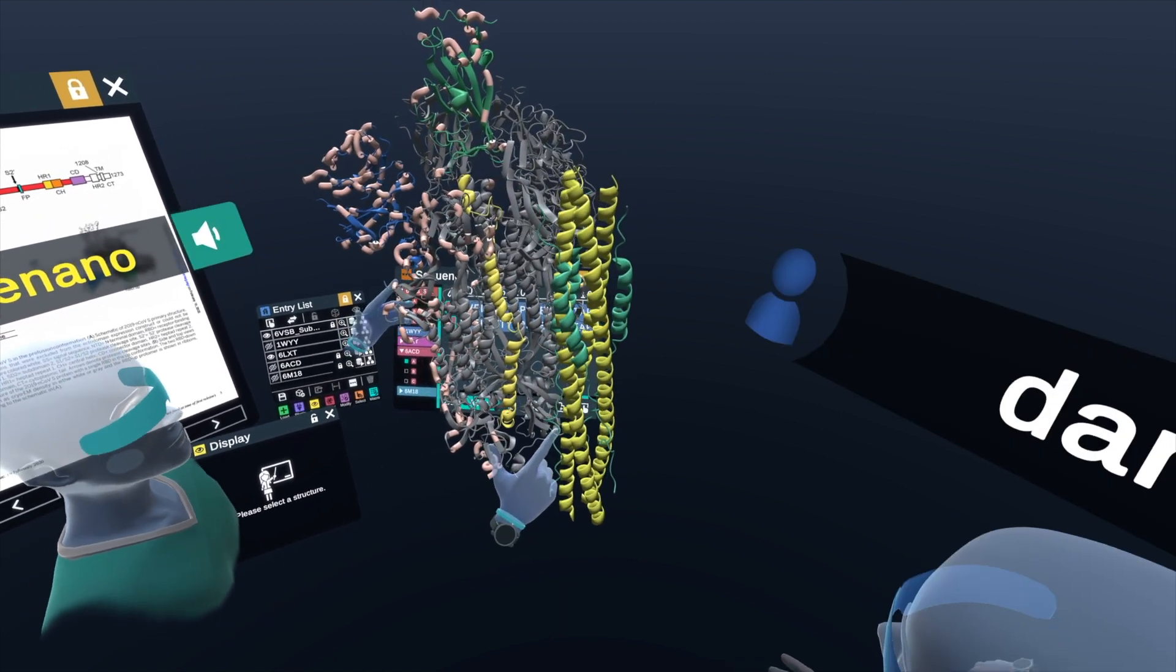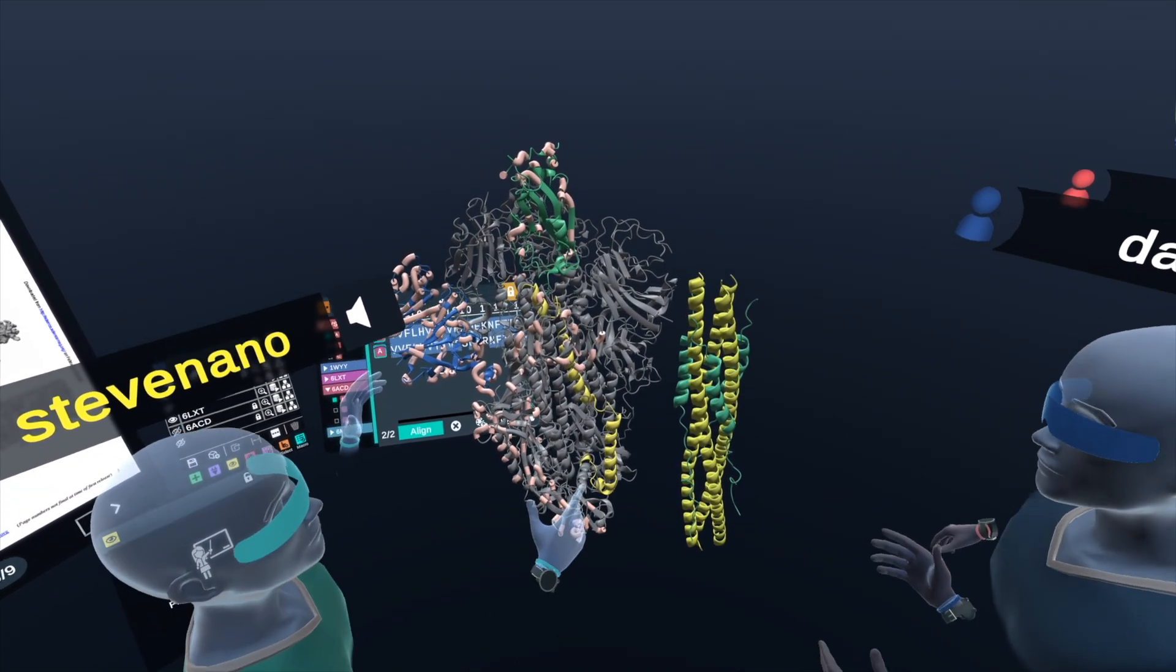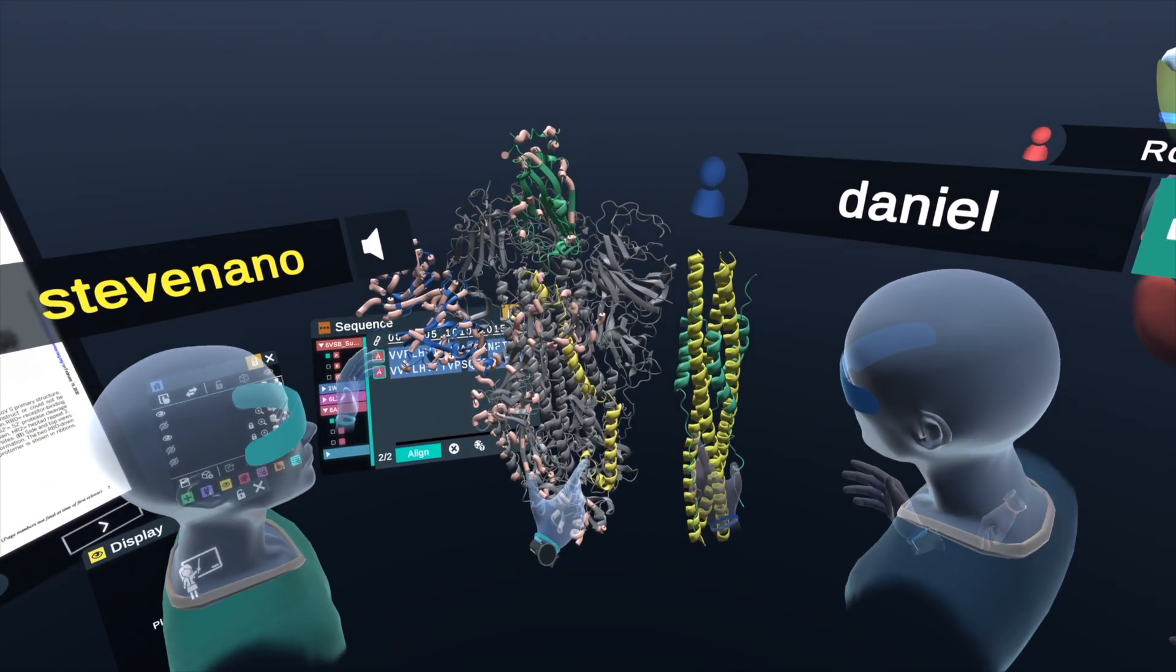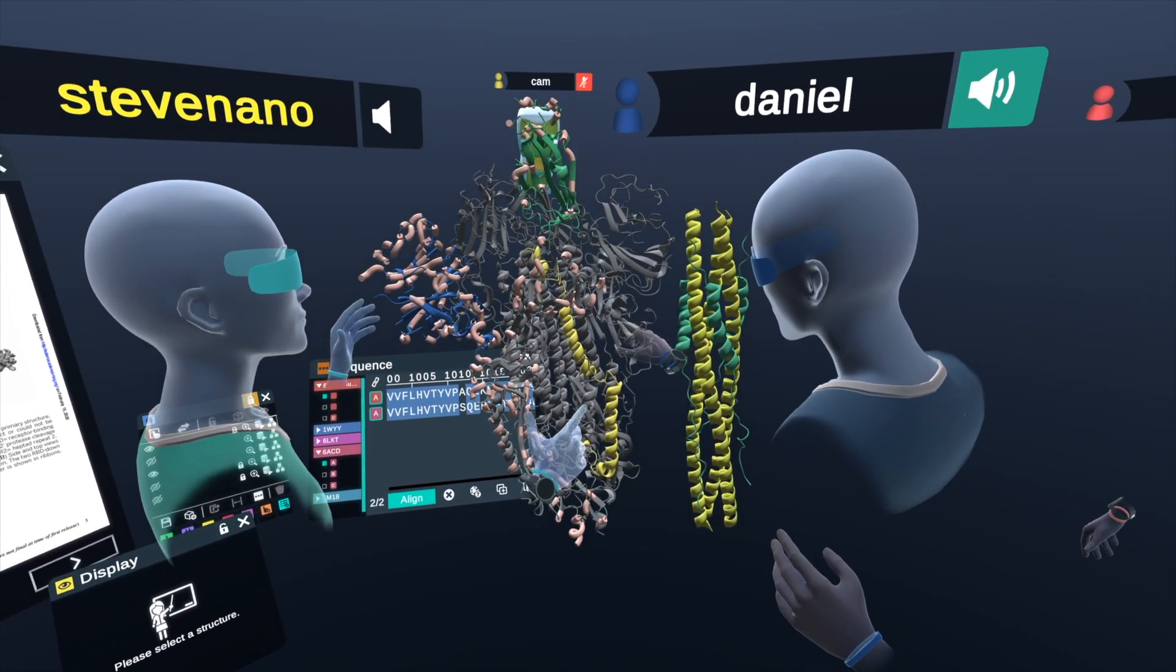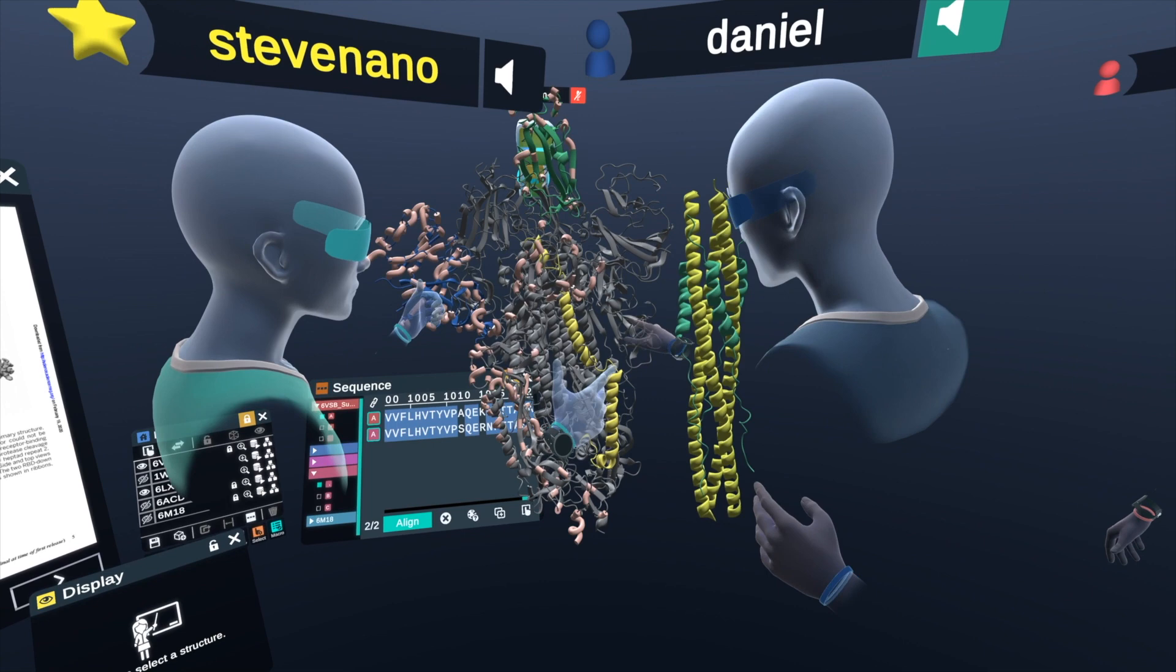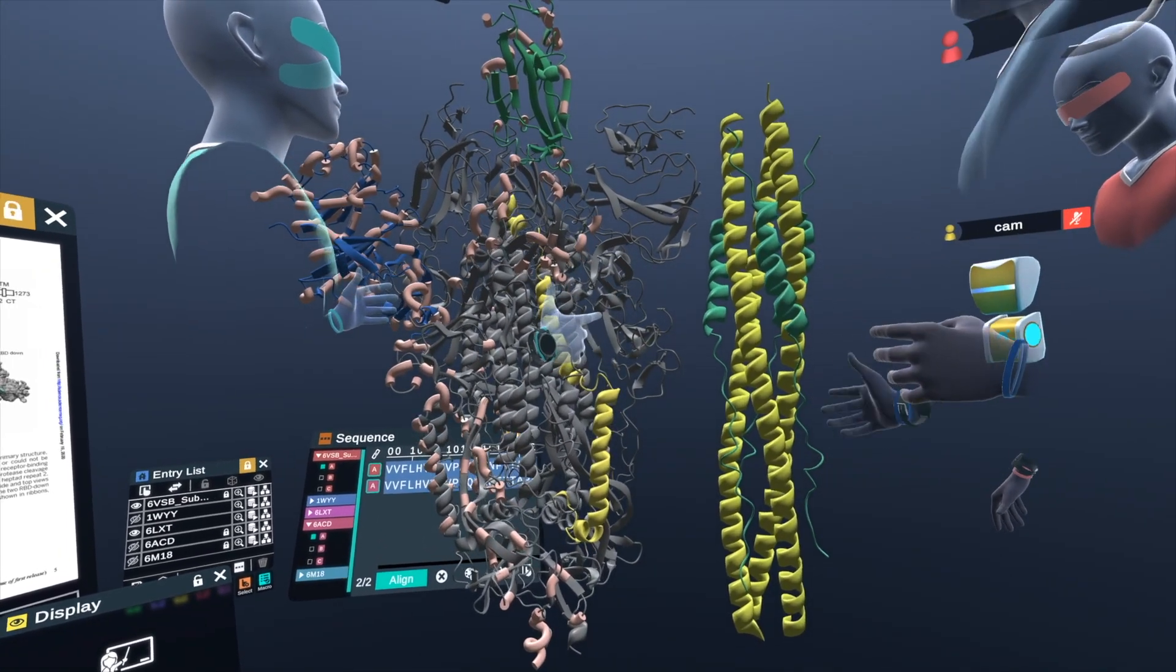And that happens after the receptor binding domain has started fusing with the human cell through the ACE2 interaction. This is one of the big changes that occurs within the spike protein. Correct. And then we have viewing cleavage between the S1 and S2 domains in the spike protein over here, so that detaches the two domains allowing for this conformational cleavage.